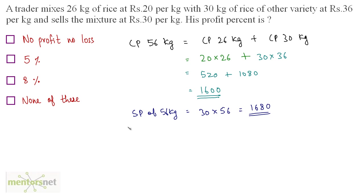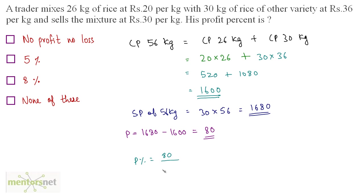So we can calculate the profit. Profit equals selling price minus cost price, which is 1680 minus 1600, so profit is Rs. 80. Profit percentage equals profit divided by cost price times 100, which is 80 divided by 1600 times 100.